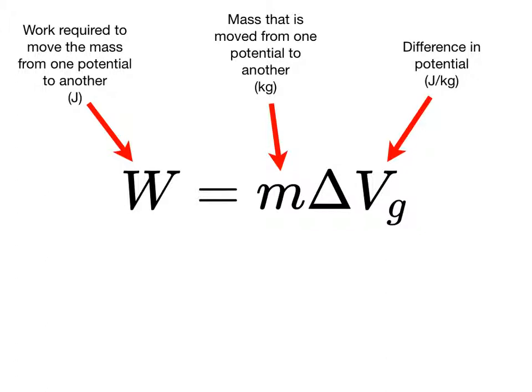Conversely, if the mass is moved from a high potential to a lower potential, which is the way it wants to move, then the work will be negative.